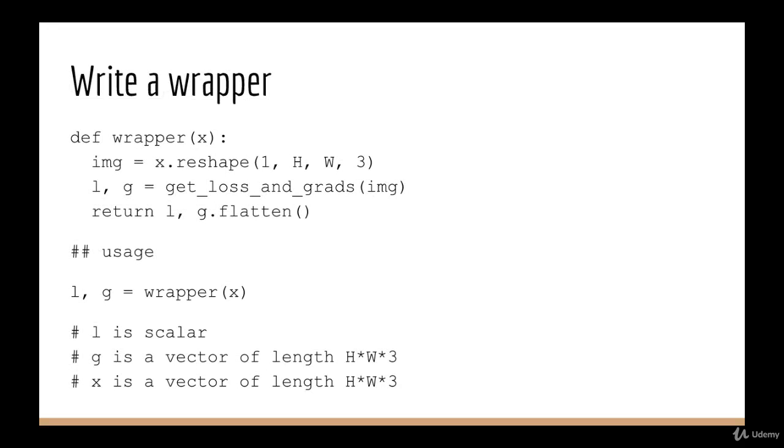So the solution is to write a wrapper function around this. Now with this function, we can see that it has the desired properties. Its input x can be a vector, which we reshape into an image. The gradient which it returns is originally the shape of an image, but we flatten it before returning it. So our wrapper function has the desired interface.